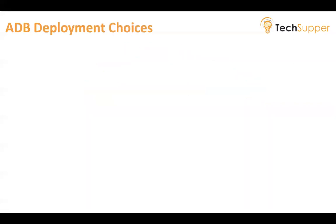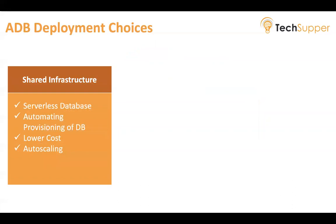Now let us discuss ADB deployment choices. The first is Shared Infrastructure. When you create your ADB, you choose which type of infrastructure to use. With Shared Infrastructure, you don't need to provision the infrastructure — you simply select it. It automates provisioning of the database, lowers cost because of the shared infrastructure, and allows auto-scaling as well.